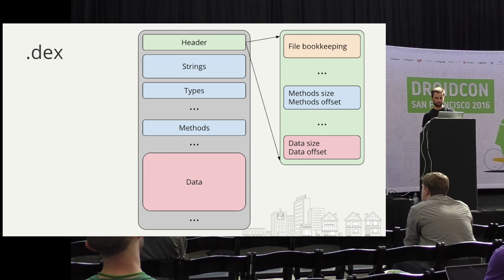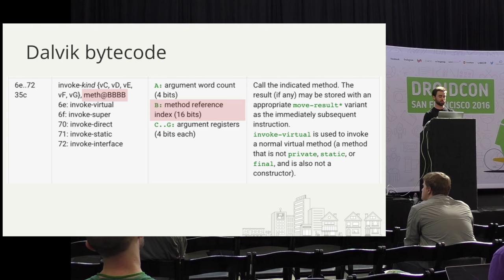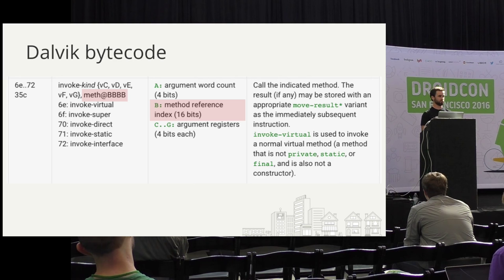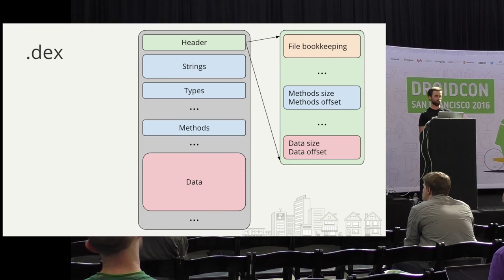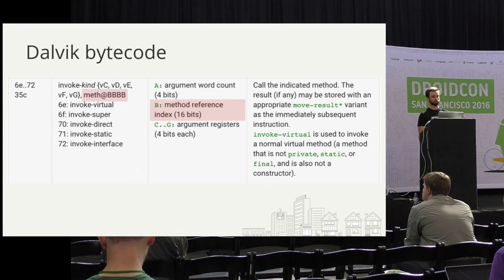If we look at Dalvik bytecode, the instruction for invoking a method — specifically the method reference index it can take — is actually 16 bits. The largest unsigned integer you can fit in 16 bits is 65K. From an optimization point of view, if we're trying to make the format smaller, what do we gain by changing the method pool size from 16 to 32 bits? We save 16 bits per file. But if we change the bits per method instruction, we potentially save a lot more. So from an optimization point of view, it makes sense for the restriction to be there.